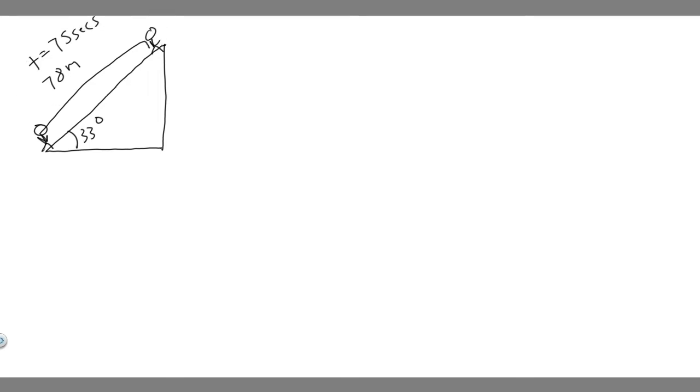So what we're trying to do here is find power. Let me actually write down the mass first. We also know the mass of the player is 92 kilograms. So we're trying to find power here. The way you can calculate power is by taking the total work done and then divide that by the time it took. We do know the time it took, which is 75 seconds.